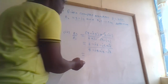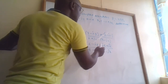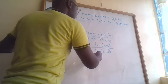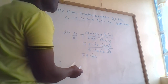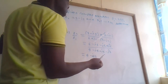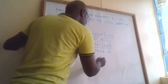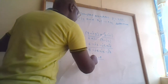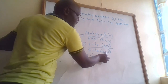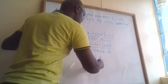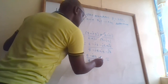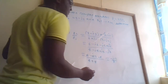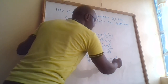Simplifying the numerator: 6 and minus j6 plus j6 cancel, and j-squared 6 becomes minus 6, giving 6 minus 6 equals 0 real part, and minus j12 imaginary part — wait, collecting: the real parts give 6 minus 6 equals 0, imaginary parts give minus j12. For the denominator: 4, the j terms cancel, and minus j-squared 4 becomes plus 4, so denominator equals 8.